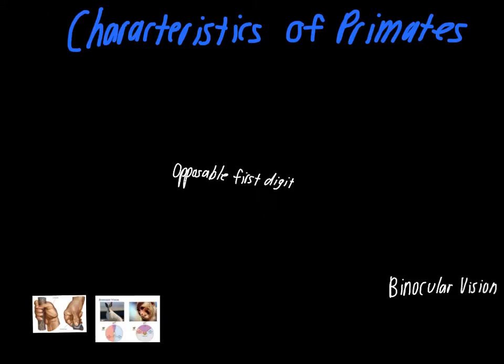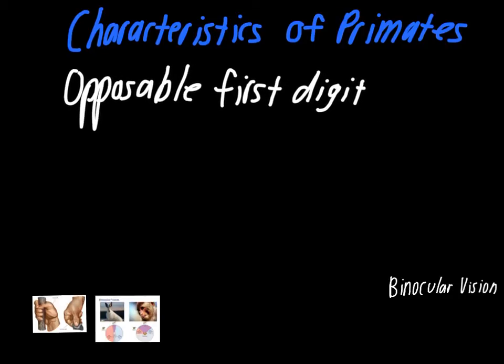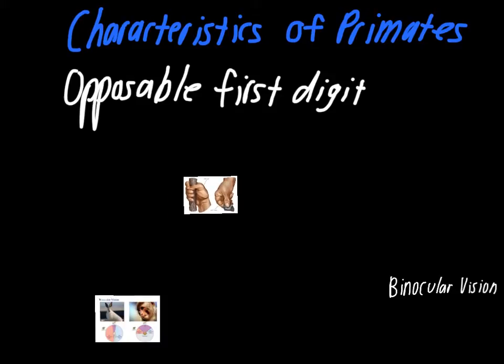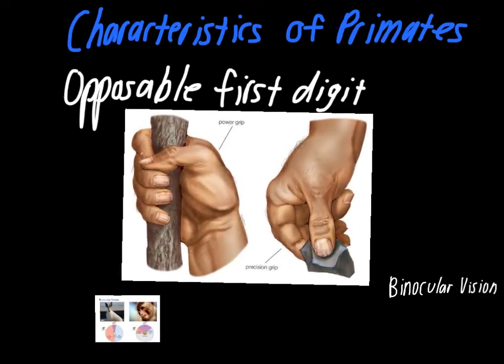The first characteristic to talk about is arguably the most important: the opposable first digit. If you look down at your hand, your four main fingers — index, middle, ring, and pinky — are all opposing your thumb, meaning they're on the opposite side of your hand. This allows us to use the thumb on the opposite side of the other fingers for different kinds of tasks.